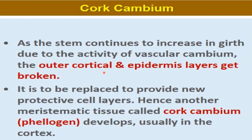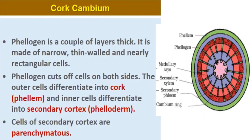When cortical and epidermis layers start to get broken, another meristematic tissue — cork cambium or phellogen — appears and replaces these layers with new protective cell layers. Phellogen is a couple of layers thick, made of narrow thin-walled and nearly rectangular cells. Like vascular cambium, cork cambium also cuts off cells on both its inner and outer sides.